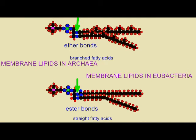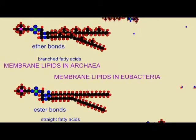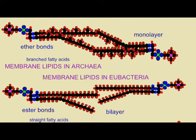The archaea are different from eubacteria in that they possess ether linkages in their cell membrane phospholipids and branched fatty acids. Sometimes these even fuse to make a monolayer. They do not use peptidoglycan in their cell walls like the eubacteria.